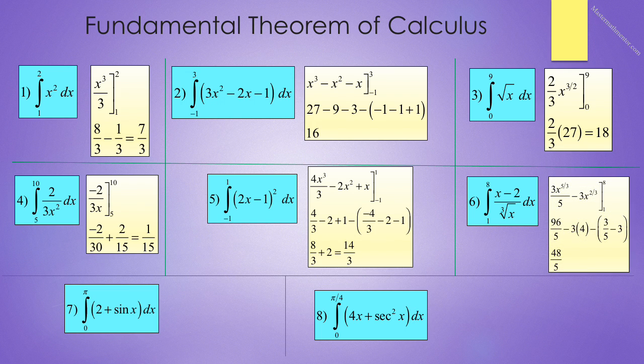Number 6 reads the integral from 1 to 8 of x minus 2 over the cube root of x. We split this into 2 fractions and integrate each piece and get 3 fifths x to the 5 thirds minus 3x to the 2 thirds evaluated from 1 to 8. So we end up with 96 fifths minus 3 times 4 minus the quantity 3 fifths minus 3. Final answer is 48 fifths.